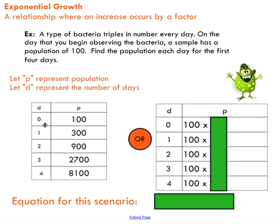Your goal is to determine the population each day for the first four days. I've done that in a table of values here showing the relationship between the number of days and the population of the bacteria. As each day increases, I'm increasing my population by a factor of three.